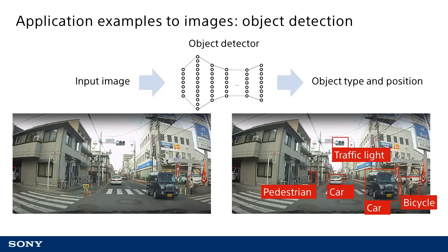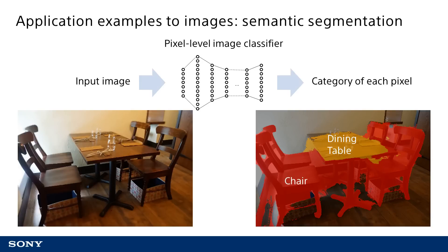Object detection can be achieved simply by developing image classification a bit more. The input is an image, as before, but the output is information such as the position, type, and size of multiple objects included in the input image. This object detection function is achieved by training the neural network to output the type and position of objects from an input image. It is also possible to recognize the object type down to the pixel level.